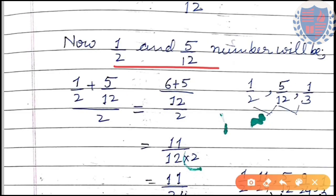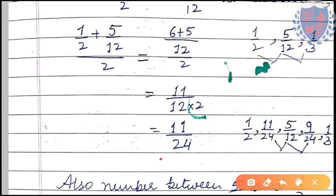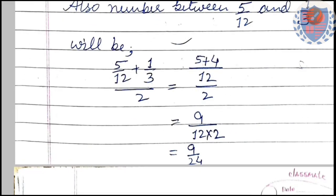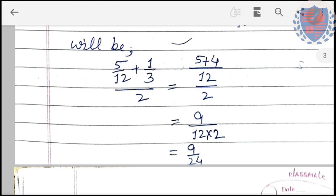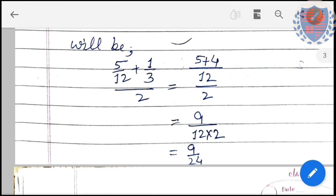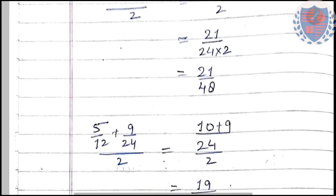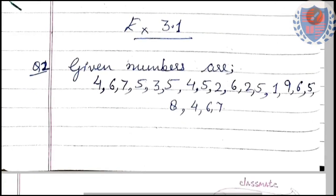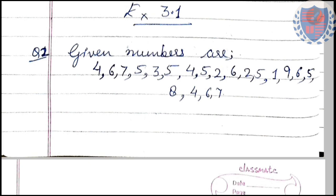Next, we find the mean between 1/2 and 5/12, which gives 11/24. Then we find the mean between 5/12 and 1/3, which gives 9/24. Two more numbers are left, so you can choose any two values and find the mean between them. Hence the five numbers are 11/24, 21/48, 5/12, 19/48, and 9/24.